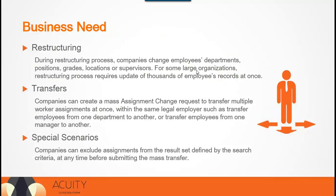Let's discuss a few of the common business requirements for which companies use the Mass Assignment Change. In Fusion, employee job information such as grade, position, department, and locations are recorded at the assignment level. Global organizations need to update the assignment information of multiple workers at once as part of restructuring. To achieve this, companies use the Mass Assignment feature to change employees' departments, positions, grades, locations, or supervisors.